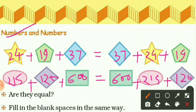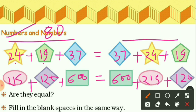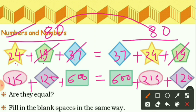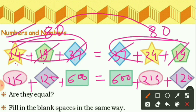Now what are you observing? Look at the left side: we have 24 plus 19 plus 37, which equals 80. Similarly, on the right side we have 37 plus 24 plus 19, and their sum is also 80. You can see the sum is the same, and the numbers are the same — 24, 19, and 37 on both sides. So LHS equals RHS.